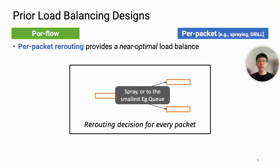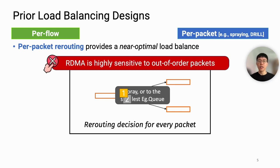In contrast, a packet load balancer such as Packet Spray makes rerouting decisions for every packet and provides near-optimal load balance. However, it causes many out-of-order packets since different paths may have different delays, and RDMA is known to be highly sensitive to out-of-order packets.